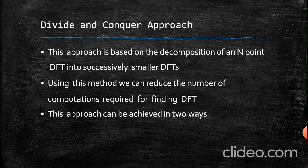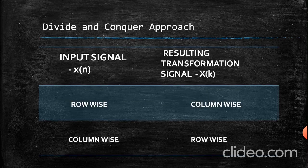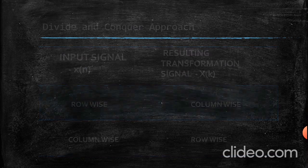This approach can be achieved in two ways. The first way is by considering the input signal row-wise, and the second way is by considering the input signal column-wise. If we consider the input signal as row-wise, the resulting transformation signal should be considered as column-wise. If we consider the input signal as column-wise, then the resulting transformation signal should be considered as row-wise.